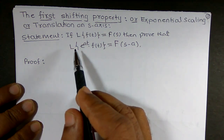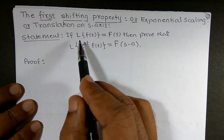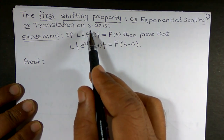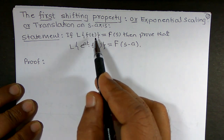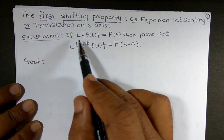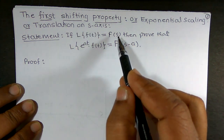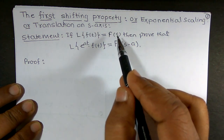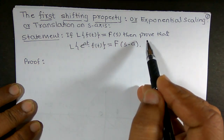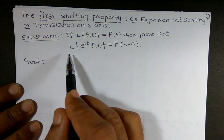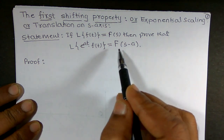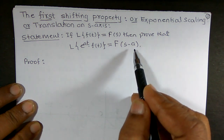The property is: if L{f(t)} = F(s), meaning the Laplace transform of a given function f(t) gives a function of s, then we want to prove that the Laplace transform of e^(at)·f(t) is equal to F(s - a).